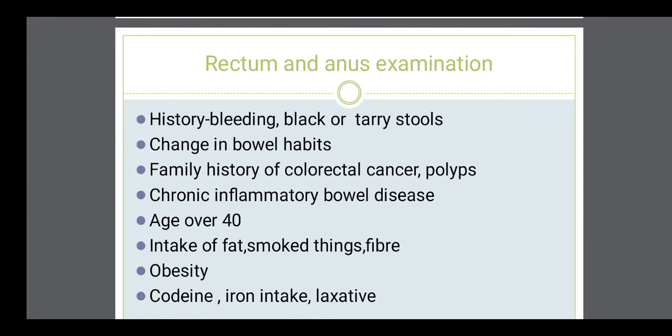After the examination of the reproductive organs, rectum and anus examination is done. The subjective data or history related to this examination will include asking the patient regarding bowel habits, the type of stool, any type of bleeding or black colored stool, and whether the patient is taking iron regularly, as that can also cause black colored stool.